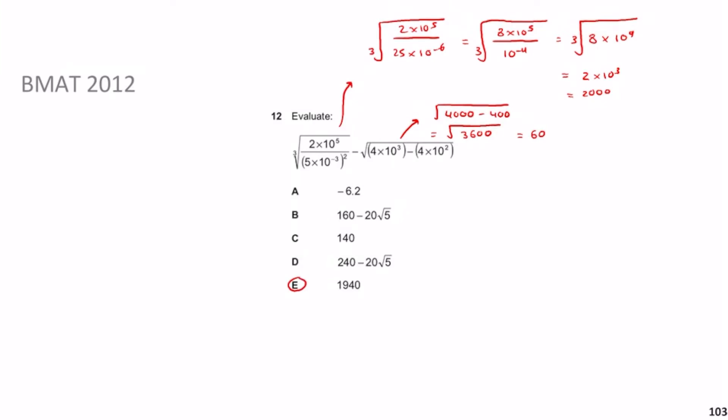The main difficulty was spotting the trick of multiplying top and bottom by 4. Factoring out powers of 10 helps most of the time, but sometimes problems have unique features like this. As you practice more questions you'll naturally get better at spotting these patterns.